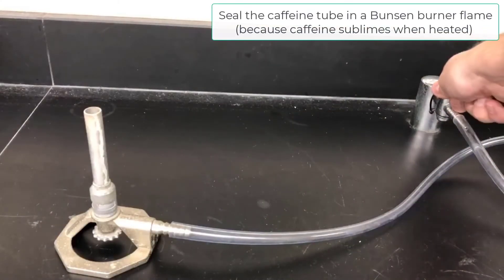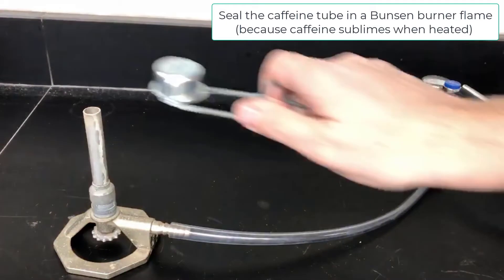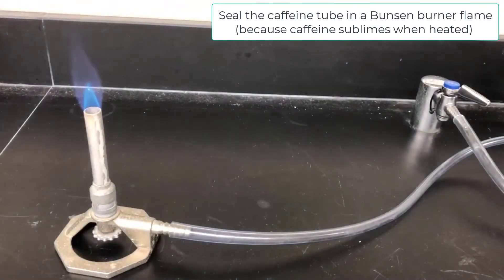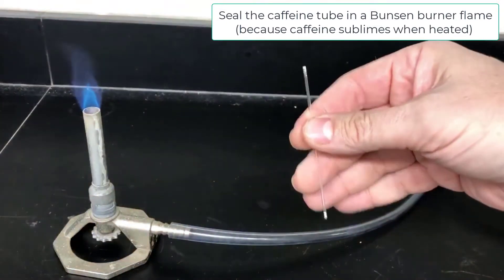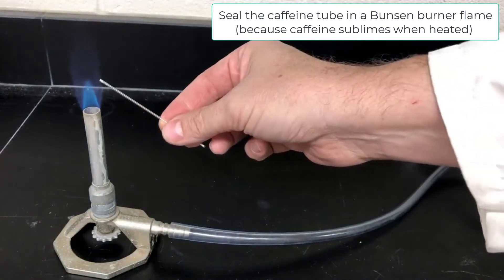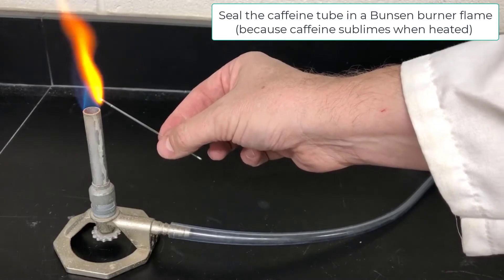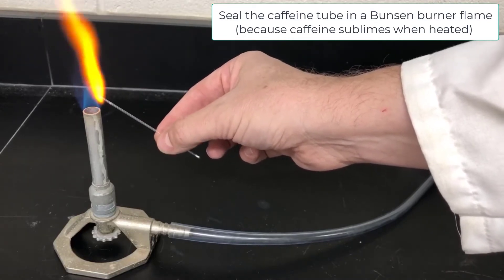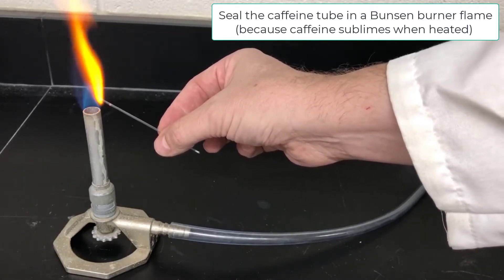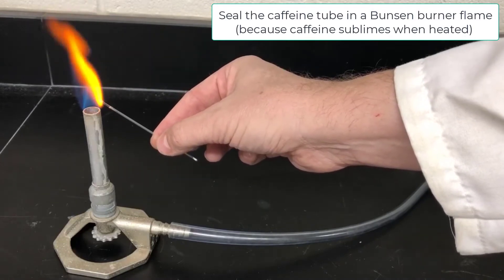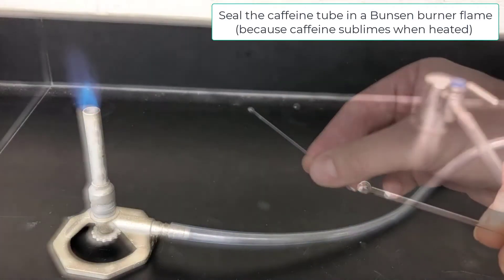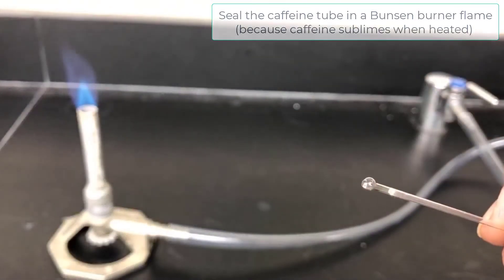Now I need to seal the top of the caffeine tube by heating it in a Bunsen burner flame until it closes up. I only need to do this with the caffeine tube, and that's because caffeine sublimes when it's heated. I'm holding the open end of the caffeine tube just inside the Bunsen burner flame to get it orange hot and rotating it. As it gets hot, the walls will get soft and they'll close up on themselves, sealing the tube. You can tell that it's sealed if you see a bubble form in the top of the tube like this.